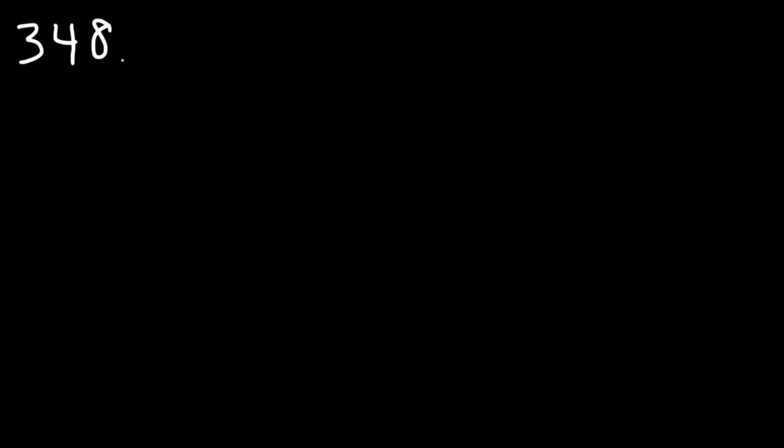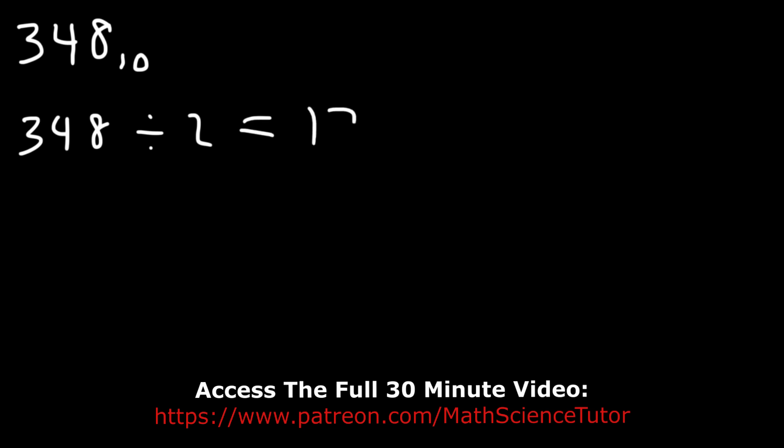Now let's talk about how we can convert a decimal number to a binary, octal, and hexadecimal number using the technique called successive division. Let's say we have the number 348 — a subscript ten means it's in the base ten system. The first thing is to take 348 and divide it by two, which gives exactly 174, remainder zero.